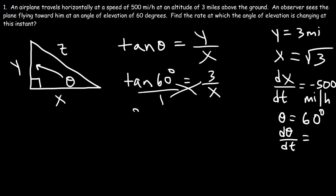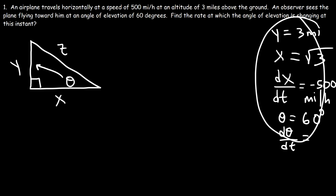Now that we have the value of x, how can we calculate dθ/dt? Looking at the information that we have, we don't have anything dealing with z. So it doesn't make sense to use z² = x² + y². The only equation that relates x, y, and theta is the tangent equation that we had before. So let's go back to that one. Tangent theta is equal to y over x.